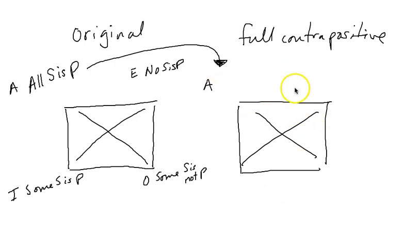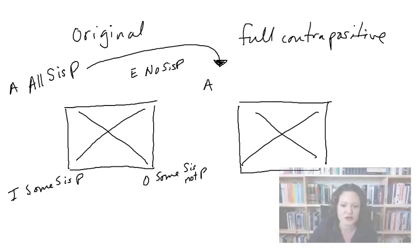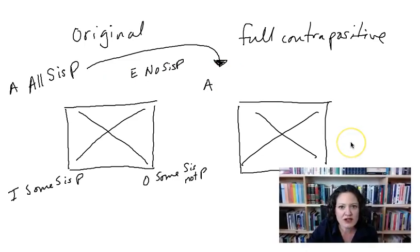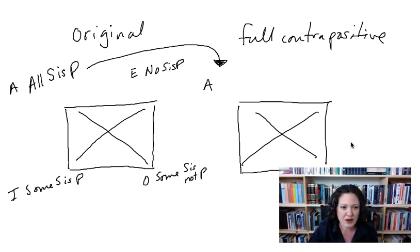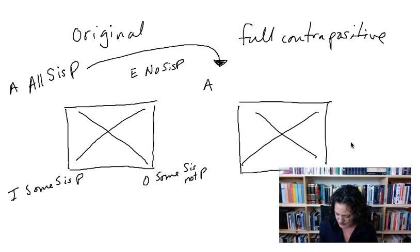The second square is going to be determined by obverting, converting, and obverting a third time this A statement. I'm going to show you how to do it and then show you a shortcut so you don't have to do this every time. When I was a student I got stuck in a loop — I just kept obverting, converting, obverting over and over and never got anywhere. So I want you to avoid that error.